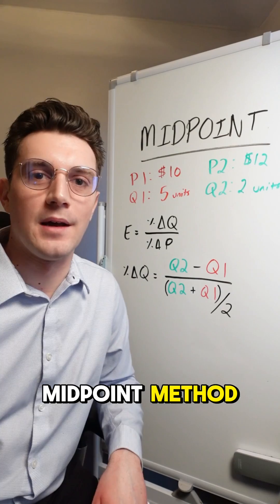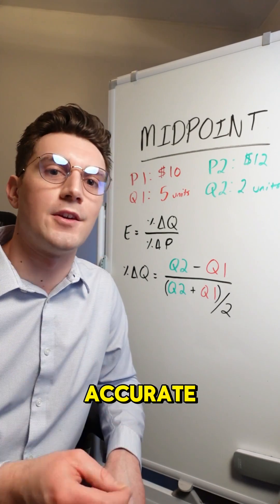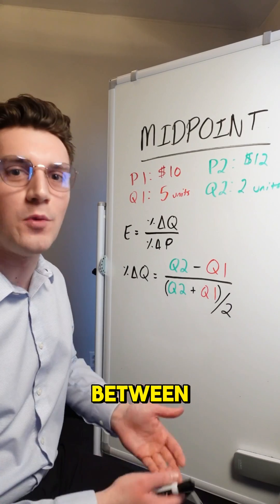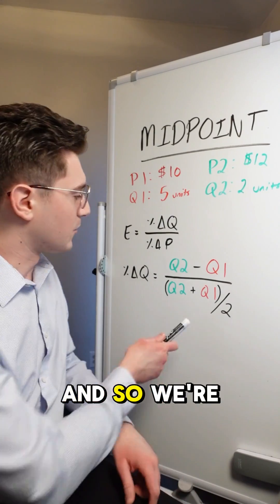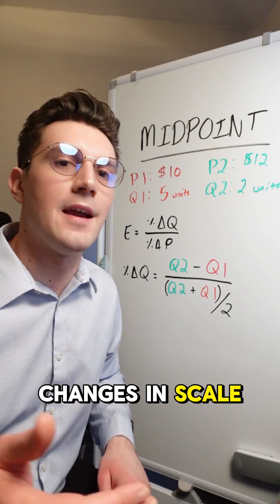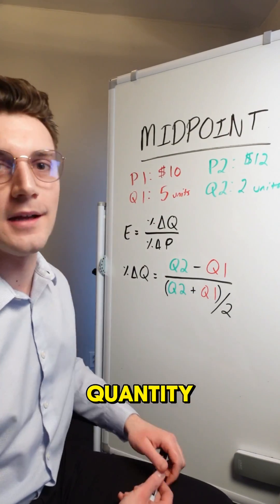This is what's different about the midpoint method and it's what makes it more accurate because we can have massive shifts between quantity and price here.